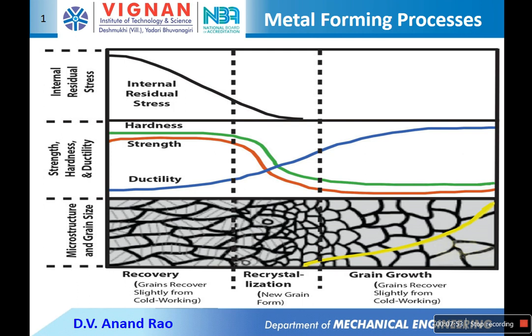If temperature is increased further beyond the recovery zone, nucleation will start at different zones. Because of this nucleation, new grains or new crystals will start forming and the properties of the material will change compared to before, with prior adverse properties eliminated. At this stage, internal stresses are almost zero. In the recrystallization zone, a drastic change in hardness and strength is observed, along with a drastic increase in ductility.